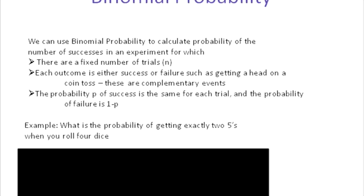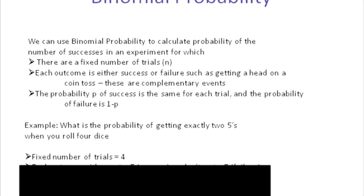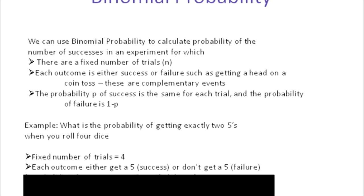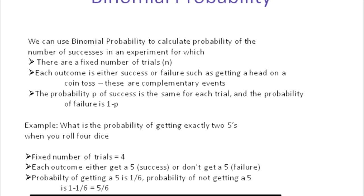So it fits the binomial probability setup: it's a fixed number of trials — four. Each outcome you either get a five on the die or you don't, so we have success and failure. The chances of a success are one over six, and the chances of failure on each trial are five over six. All we need to do now is put it into a formula and get the answer.